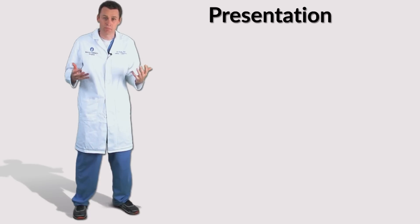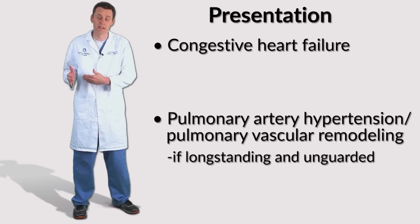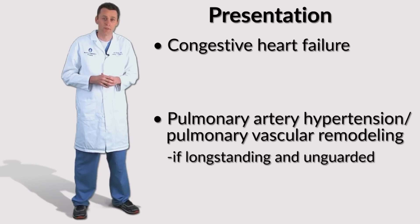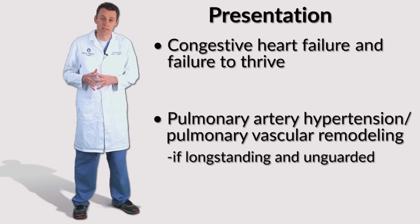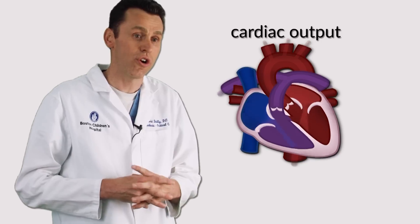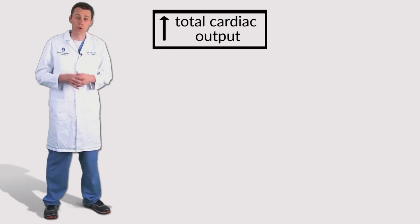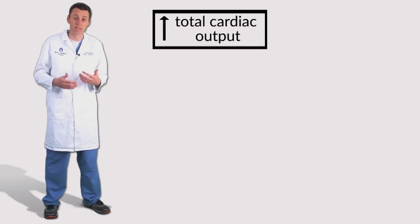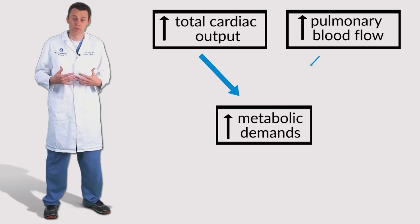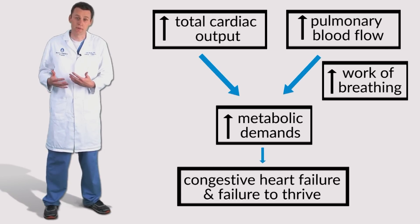Presentation. These patients present in congestive heart failure and pulmonary artery hypertension if the defect is long-standing and unchecked. The main determinants of congestive heart failure and failure to thrive are the degree of shunt and the degree of work of breathing imparted by that shunt. The cardiac output needed to maintain normal systemic circulation in the setting of increased pulmonary blood flow must be increased, placing significant metabolic demands on these patients. Increased pulmonary metabolic demand from the work of breathing is another key determinant.